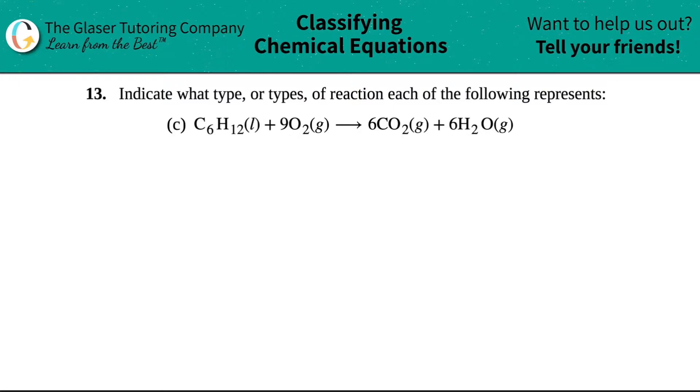Number 13: indicate what type or types of reaction each of the following represents. Letter C: C6H12 which is a liquid, plus oxygen O2 gas, will yield or produce CO2 gas and H2O gas. We've done a bit on formation reactions and talked about double displacement and neutralization reactions.